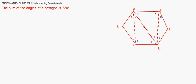Adding all four equations, the left side gives all the angles of the hexagon, and the right side is 180 × 4 = 720 degrees. We will be taking up questions in the next sessions based on angle measurements of various quadrilaterals. Thank you.